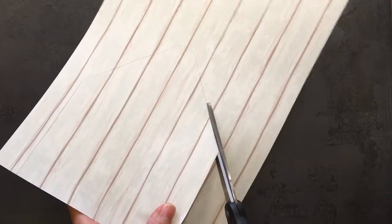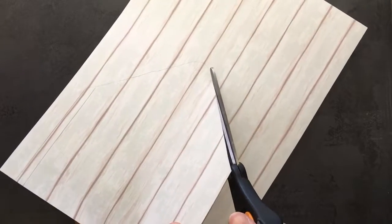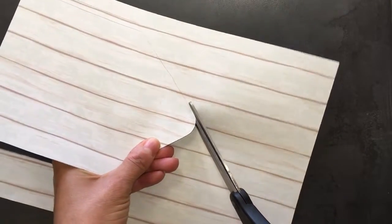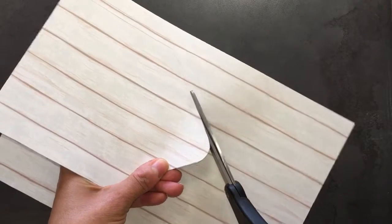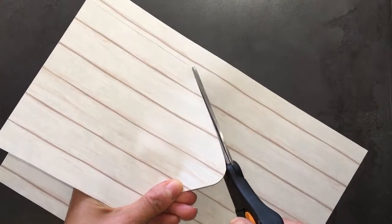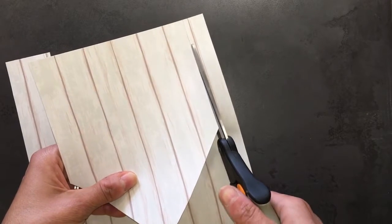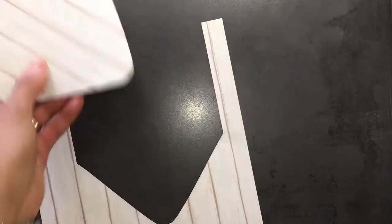Apply the double-sided tape to the outside edge of the envelope.